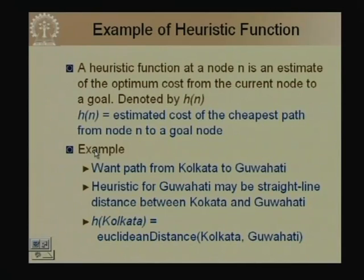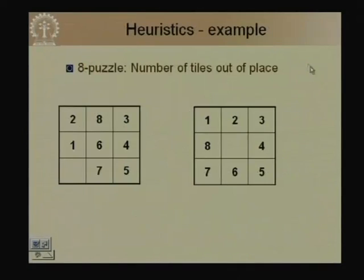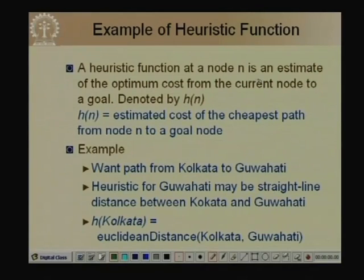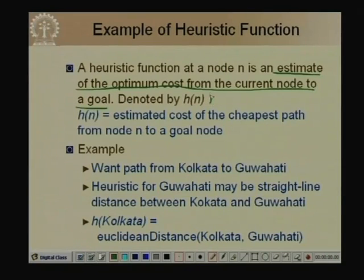A heuristic function h(n) at a node n is an estimate of the optimum cost from the current node to a goal. We denote it h(n): the estimated cost of the cheapest path from node n to the goal node. Heuristics literally means 'rule of thumb' — criteria or principles for deciding which among several alternative courses of action promises to be most effective.